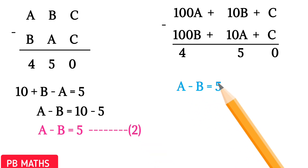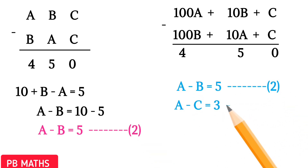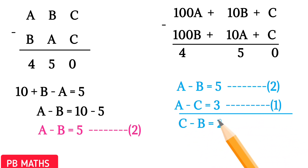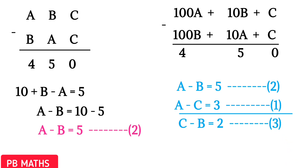From equation 1 and equation 2, we can write C minus B equals 2. Let's call this equation 3. We know that A is greater than B and A is greater than C. From equation 3, we can also say that C is greater than B.